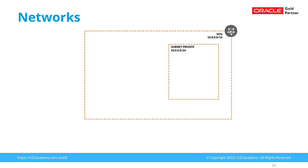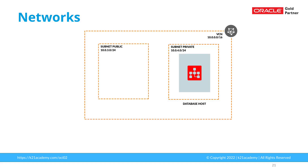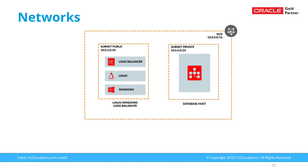These networks are typically broken down to smaller networks called subnets, in which you create your resources like virtual machines or databases. The subnets can be private or public — secure applications like databases go into a private subnet, while load balancers or end-user-facing resources go in a public subnet. These machines in different subnets need to talk to each other, and this is where we use a firewall, or security list in OCI terminology, or you can also create a network security group.